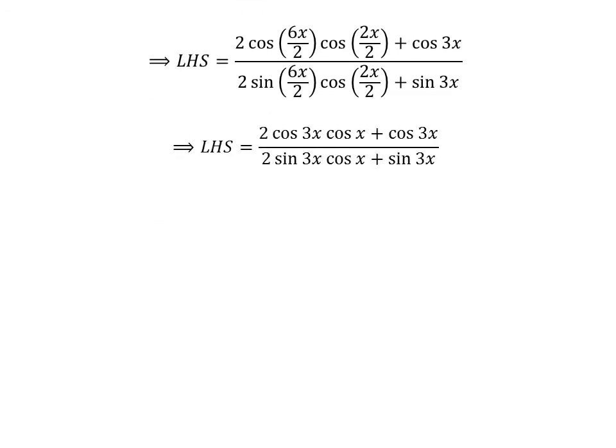Cancelling out the common factor 2 gives us the left hand side equal to 2 times cosine of 3x times cosine of x plus cosine of 3x, upon 2 times sine of 3x times cosine of x plus sine of 3x.